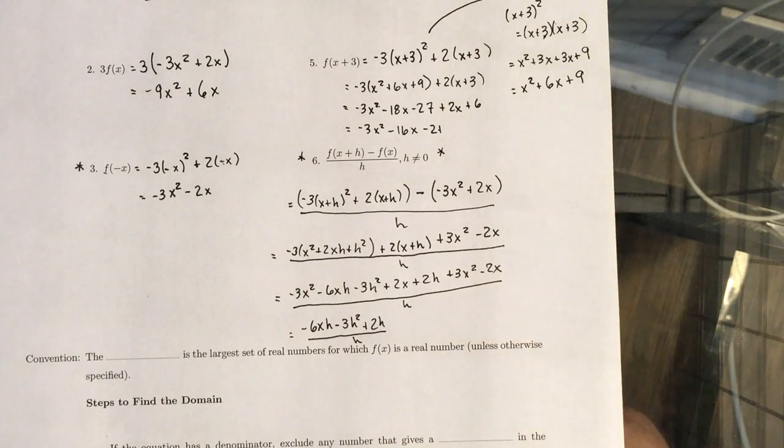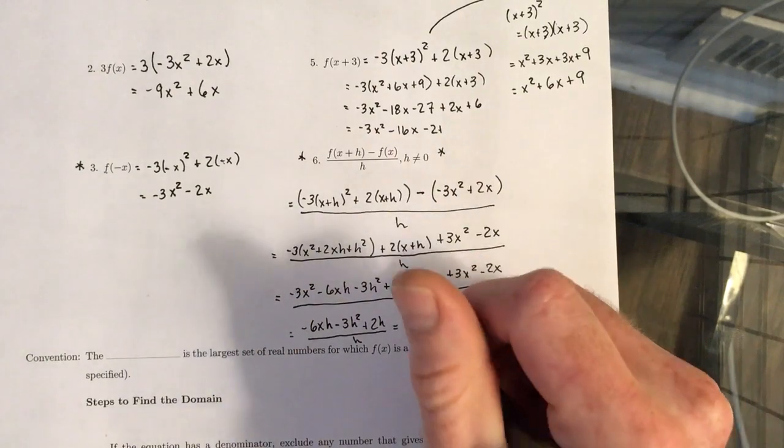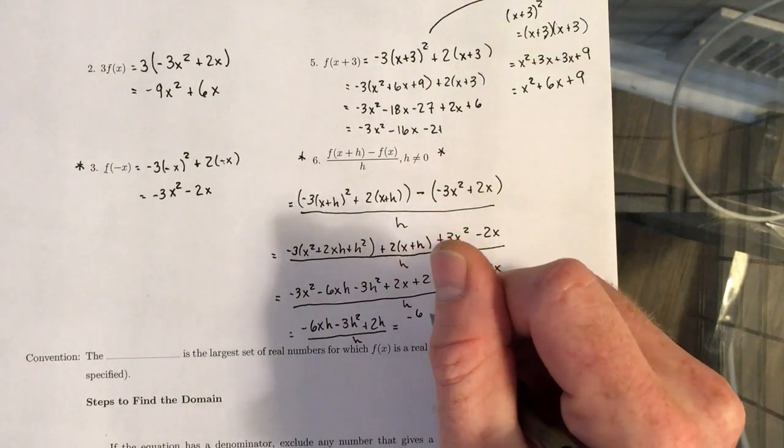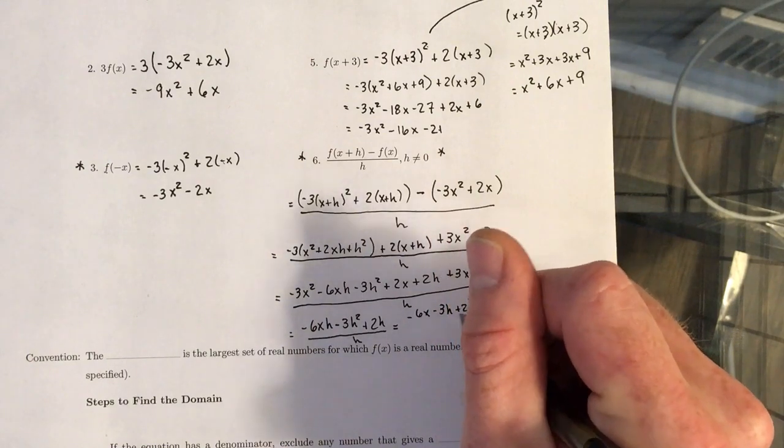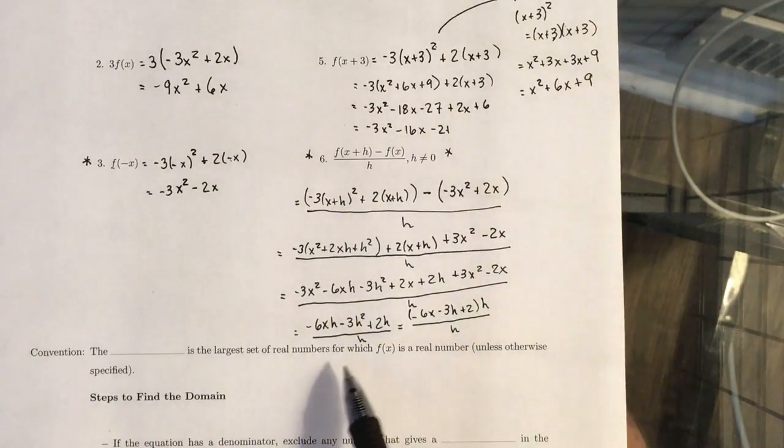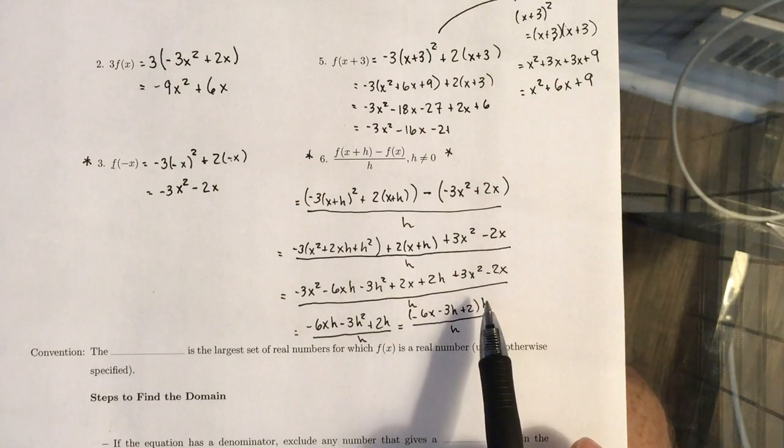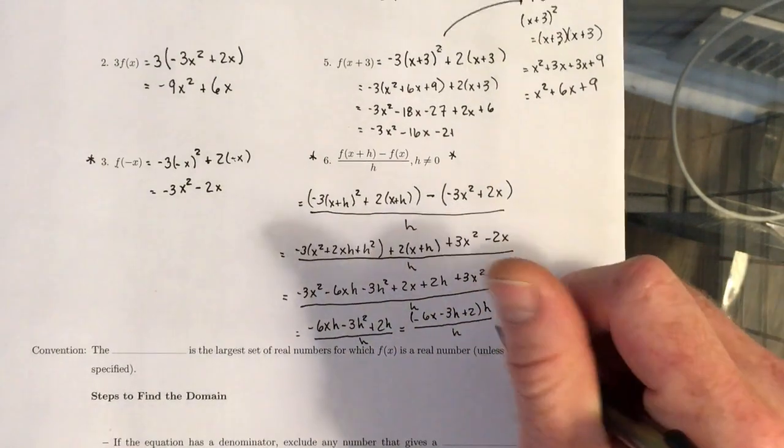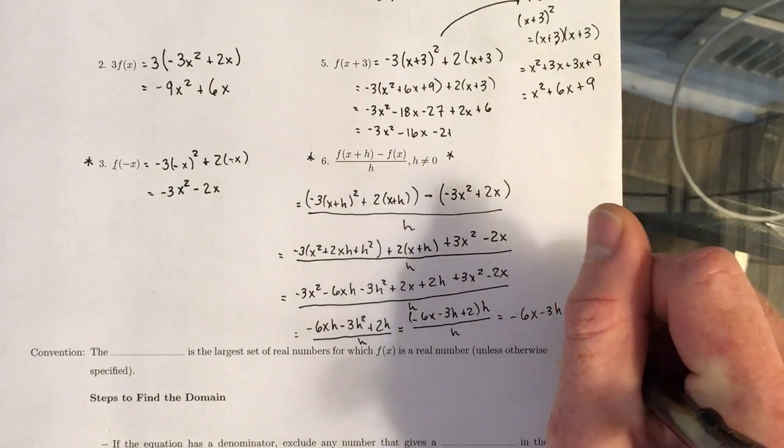Now, everything in the numerator has an H. We have an H in the denominator. And so let's try to cancel it. Just to recall how to cancel this. First, we're going to factor out the H from each expression in the numerator. And now, since we have an H in the denominator, right, we're dividing. And we have an H in the numerator. We have an H over H. Those two knock each other out. And we're left with negative 6X minus 3H plus 2.